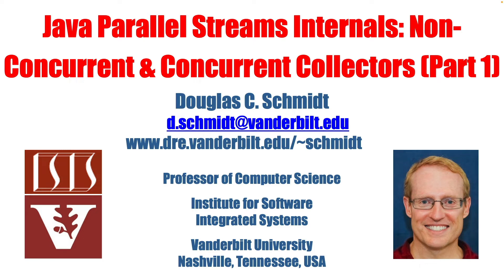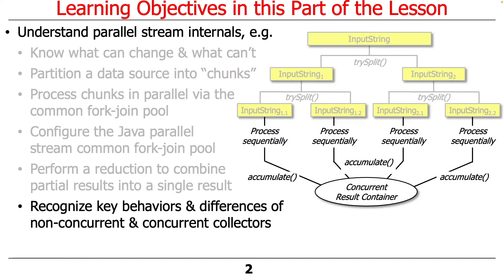We're going to start talking about non-concurrent versus concurrent collectors. We've talked a bit about the fact that there are two different types of collectors, but haven't explained in much detail how they differ. The main way they differ has to do with the mutable result container. For concurrent collectors, there's one mutable result container that must be concurrent and synchronized, whereas for non-concurrent collectors, you don't have just one, and it doesn't need to be synchronized.